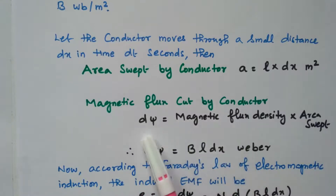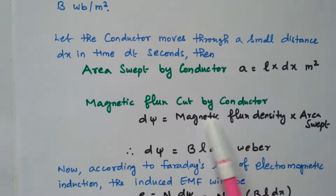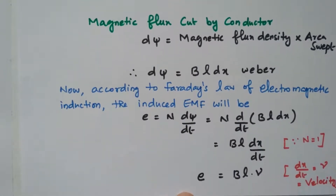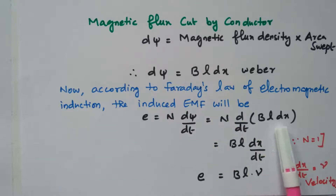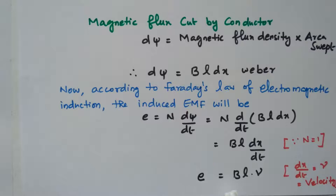The magnetic flux cut by the conductor is dφ = B × A = B × L × dx. According to Faraday's law, E = N dφ/dt. Substituting φ = BLdx, we get E = N × BL(dx/dt). Taking N = 1 (one turn), and since dx/dt is velocity, we obtain E = BLV.